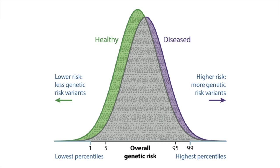If you calculate PRS for many people you will see that the scores follow a normal distribution. The PRS of a single individual may then map to a lower, average, or higher percentile within that distribution.